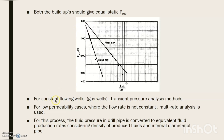For constant-flowing wells, such as gas wells, transient pressure analysis methods are used. For low-permeability cases where the flow rate is not constant, multi-rate analysis is used. In this process, the fluid pressure in the drill pipe is converted to equivalent fluid production rates considering the density of produced fluids and the internal diameter of the pipe.